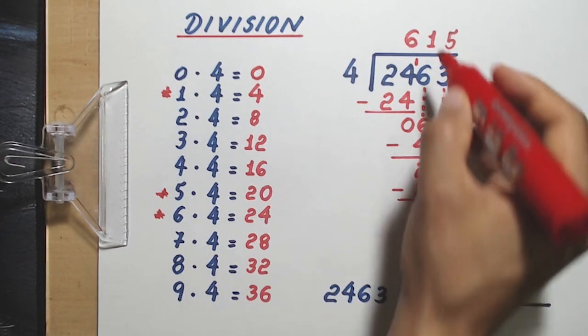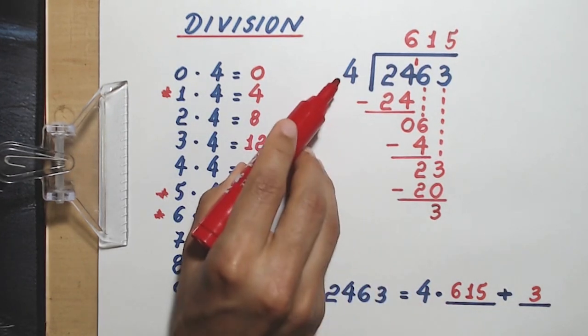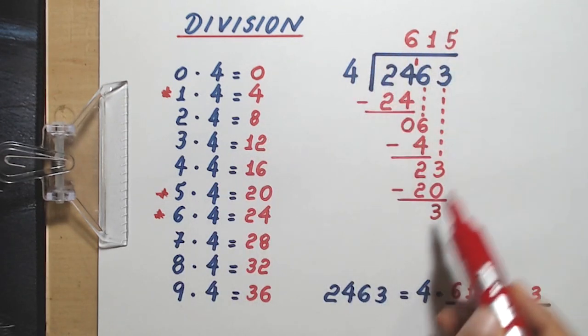That means the whole quotient in this division is 615, and the remainder is 3. To check that the division was done correctly, you can multiply the divisor and the whole quotient, get the product, and then add the remainder.